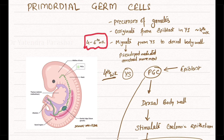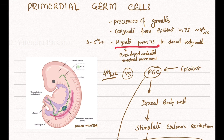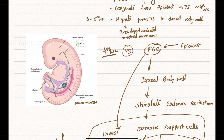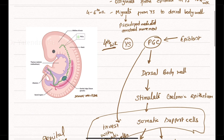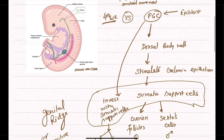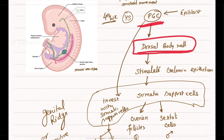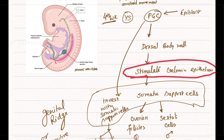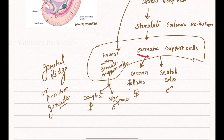From the fourth week to sixth week of gestation, these primordial germ cells start to migrate from the yolk sac towards the dorsal body wall of the developing embryo with the help of pseudopod-mediated amoeboid movements. When they reach the dorsal body wall, they stimulate the coelomic epithelium to form somatic support cells.